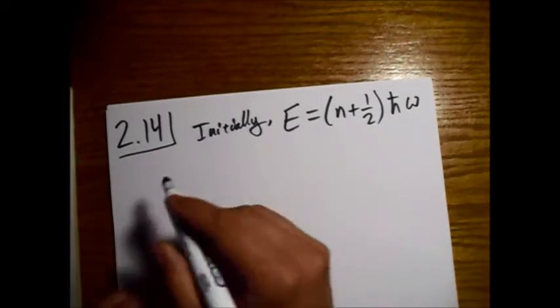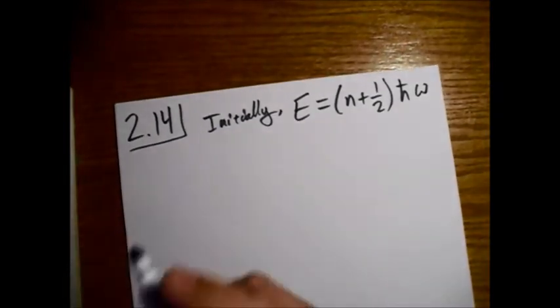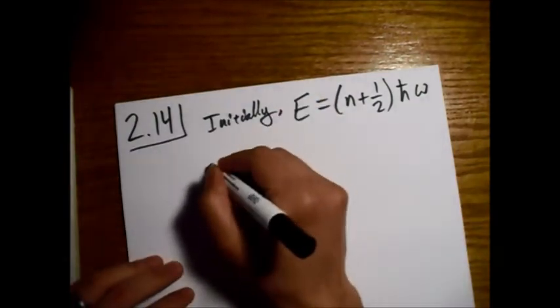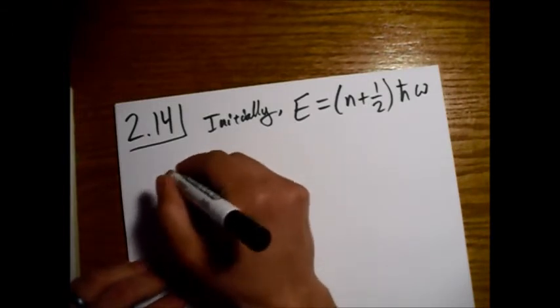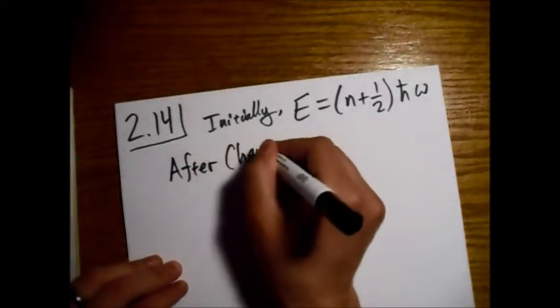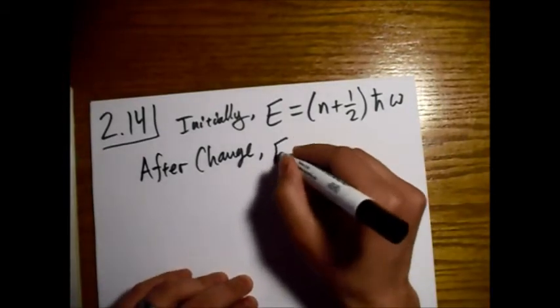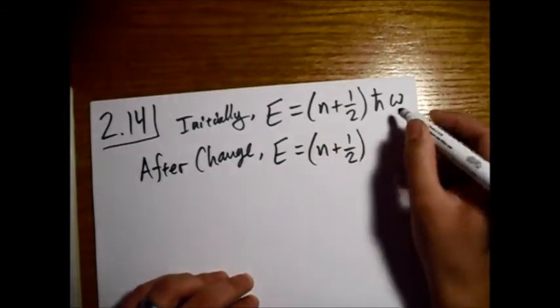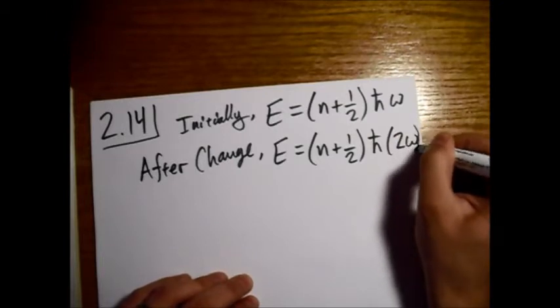But with the new Hamiltonian, after change, we have E equals n plus one-half h-bar, and now we have a 2 omega here.